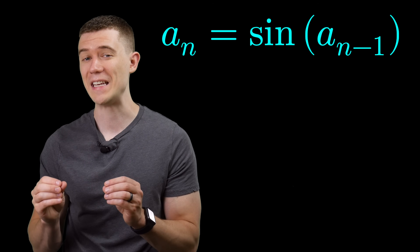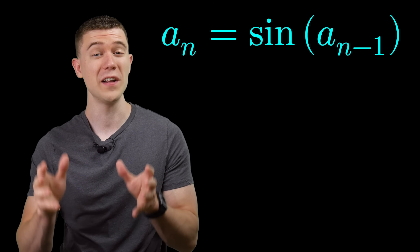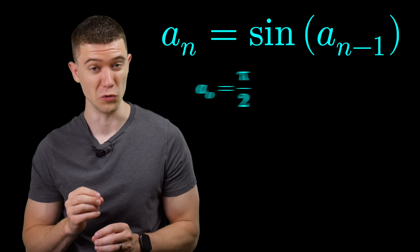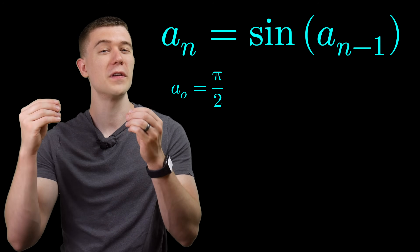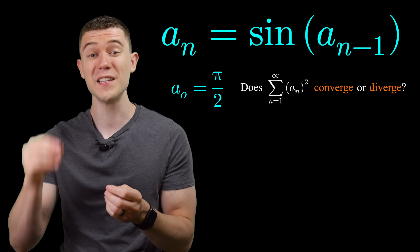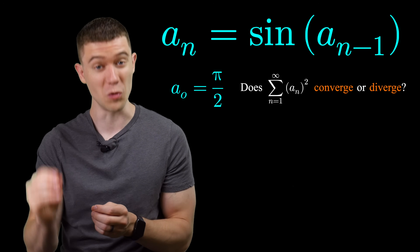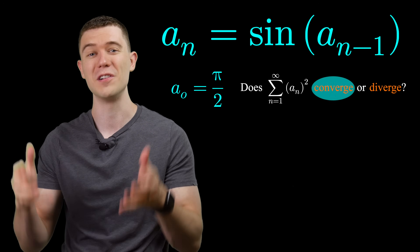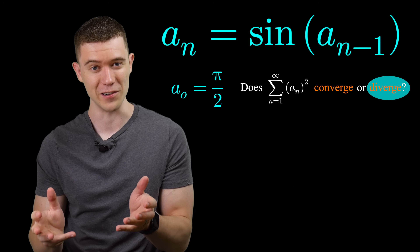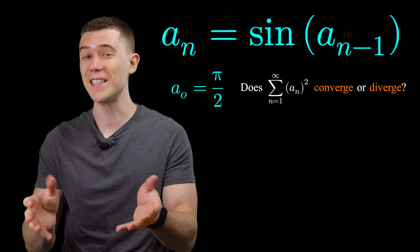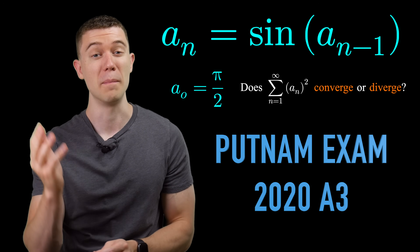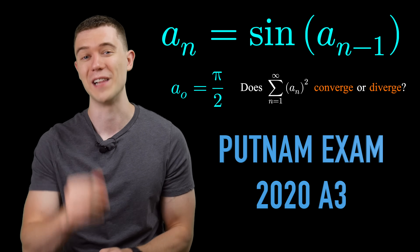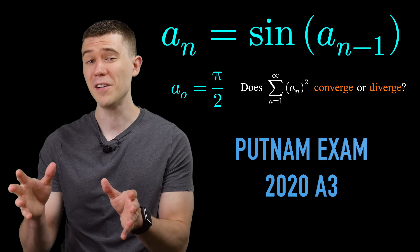Take a look at this nested sequence starting at pi over 2. Our job is to figure out whether the sum of this sequence squared converges or diverges. This is a very interesting problem from the Putnam exam of last year.